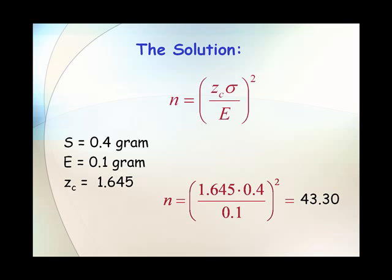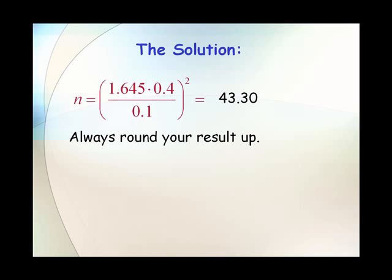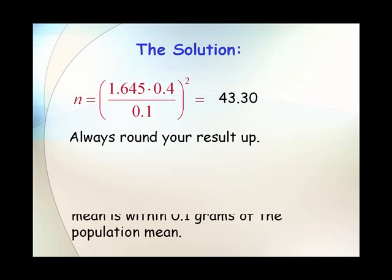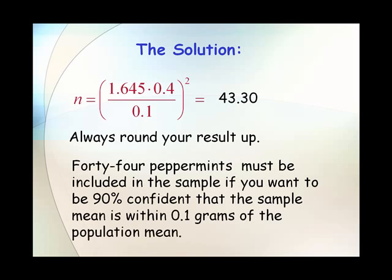Now, we don't really want to sample 0.3 of a peppermint, so what do we do? Well, we always round our results up. Even though it's less than half, we're still going to round it up. And so the solution is that we need 44 peppermints to be included in the sample if we want to be 90% confident that the sample mean is within 0.1 grams of the population mean.